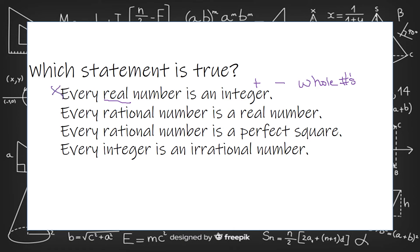So that can't be it. Every rational number is a real number. Every rational number is a perfect square. So that would mean the only rational numbers would be 4, 9, 16, 25, dot dot dot. No, that one's not true.